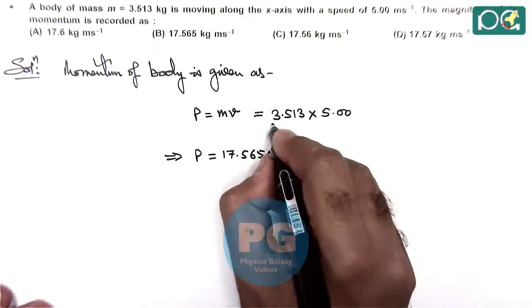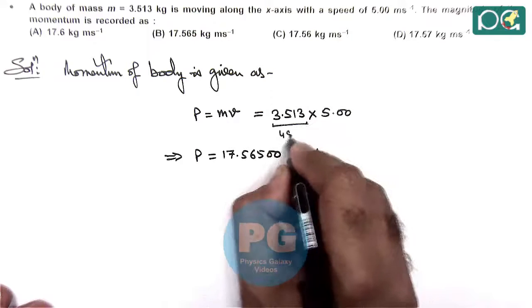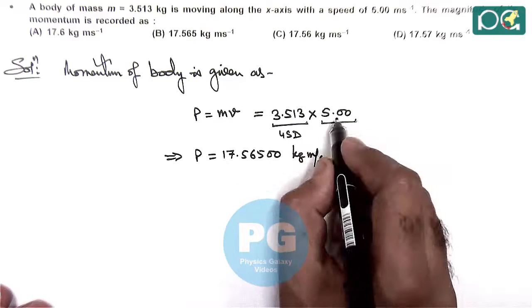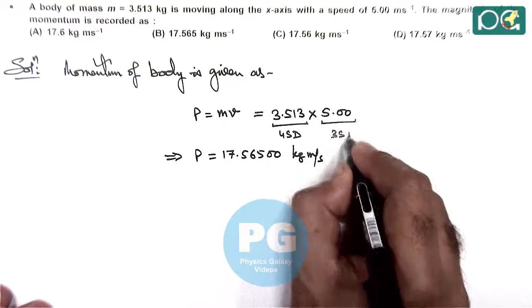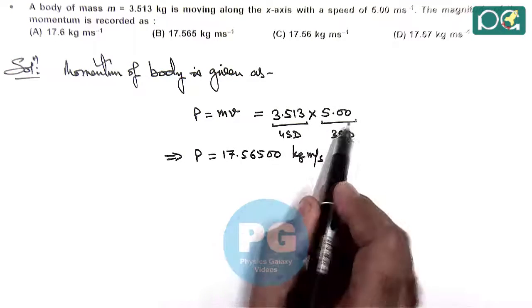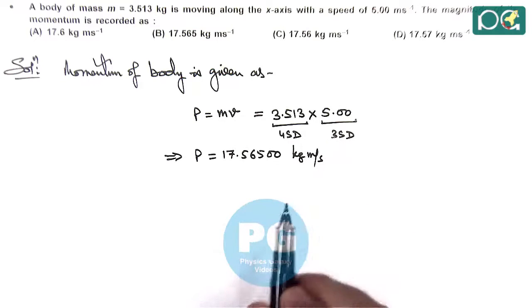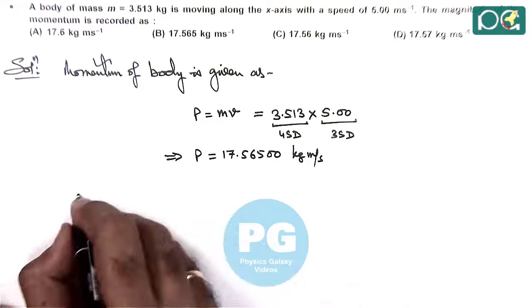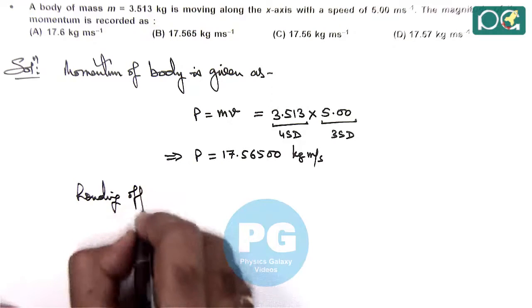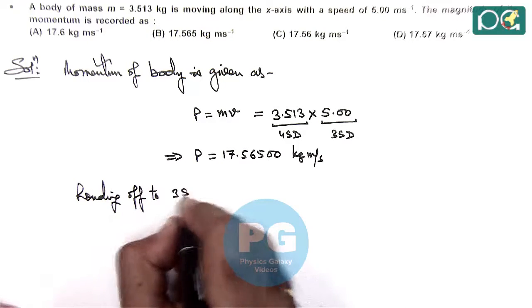Here you can see, the mass is having 4 significant digits, whereas the speed is having 3 significant digits, and the product rule for rounding off is we'll round off the value to minimum number of significant digits. So we'll round off to 3 significant digits.